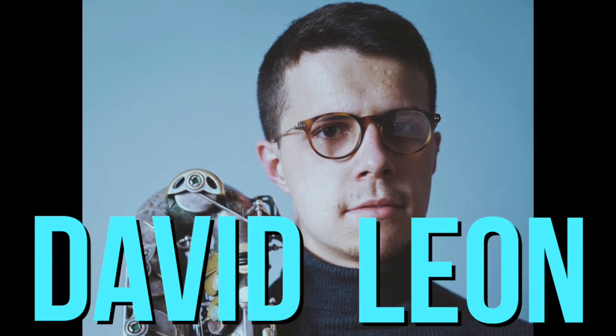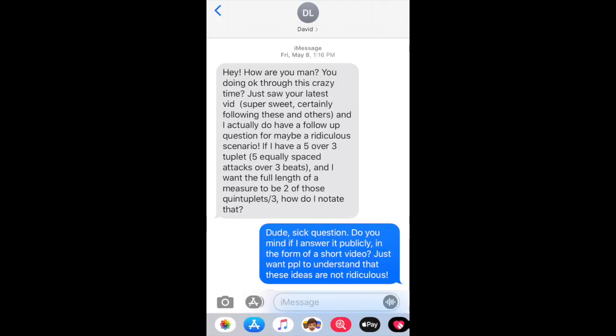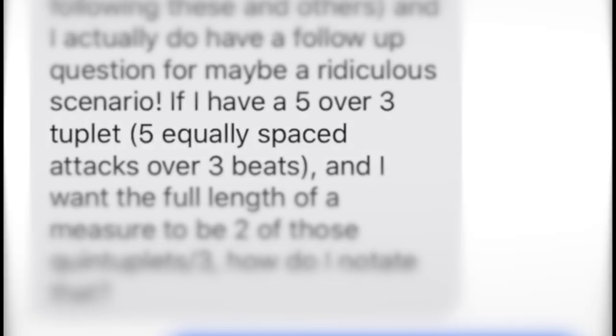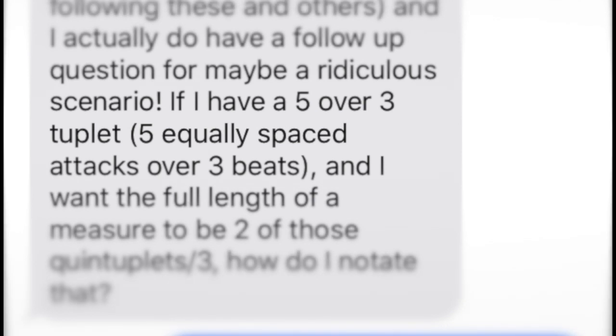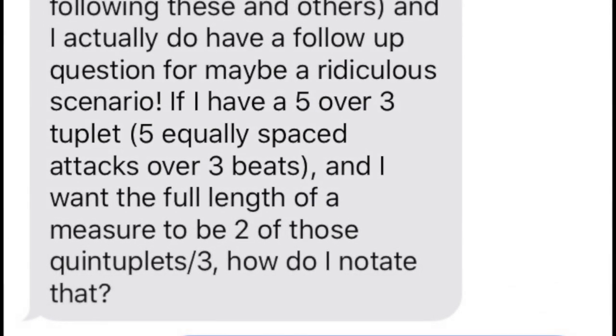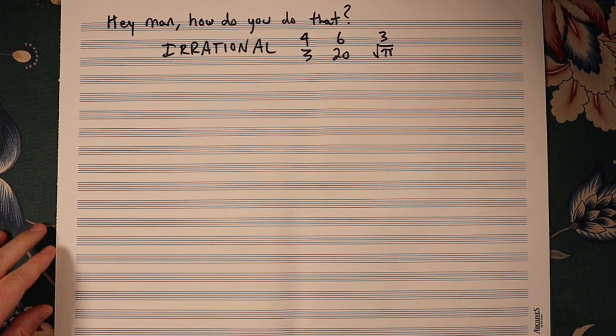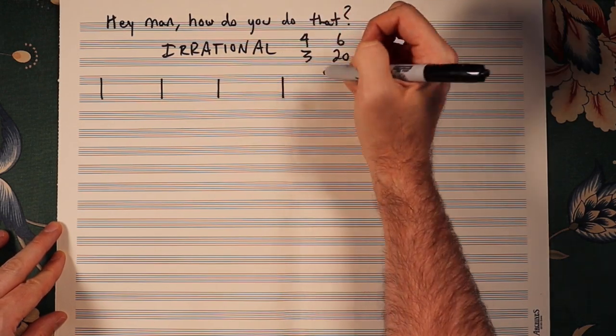Have you heard of alto saxophonist and composer David Leon? He's just brilliant and inspiring, and I'd highly recommend you check out his music. David asks, if I have a 5 over 3 tuplet, 5 equally spaced attacks over 3 beats, and I want the full length of a measure to be 2 of those quintuplets over 3, how do I notate that? Let me explain this more thoroughly for those of us who might not be sure what's going on.